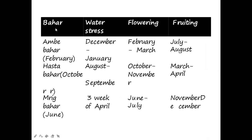There are three bahar treatments: Ambe bahar — water is withheld in December, flowering occurs in February–March, and fruiting in July–August. Hasta bahar — water stress is given from January to August, flowering appears in August–November, and fruiting in March–April. Mrig bahar — water stress is given for three weeks in April, flowers appear in July, and fruiting occurs in November–December.